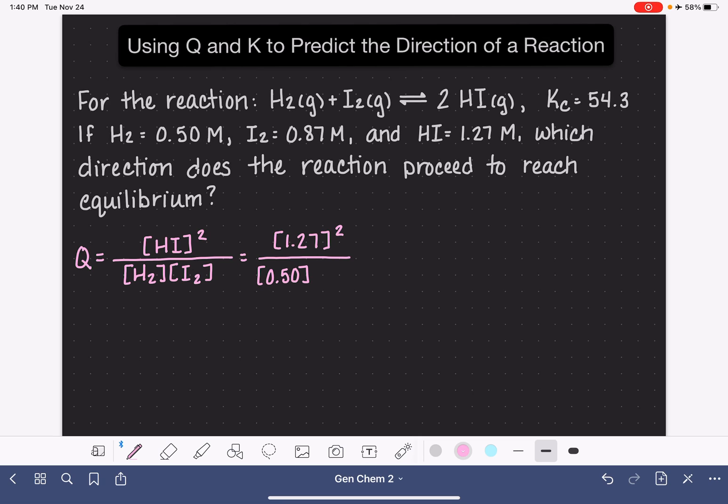And I2, the concentration of that is 0.87. We plug all of these in, do the math, and we end up with a value of 3.7.